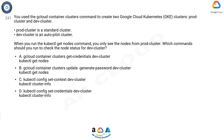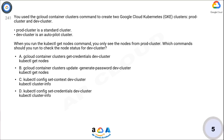A: gcloud container clusters get-credentials dev-cluster, kubectl get nodes. B: gcloud container clusters update generate-password dev-cluster, kubectl get nodes. C: kubectl config set-context dev-cluster, kubectl cluster-info. D: kubectl config set-credentials dev-cluster, kubectl cluster-info. Now think for five seconds for the correct answer.